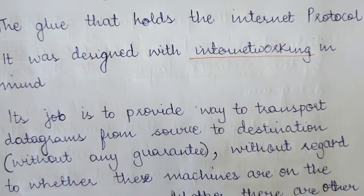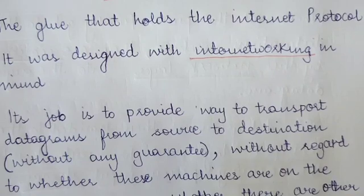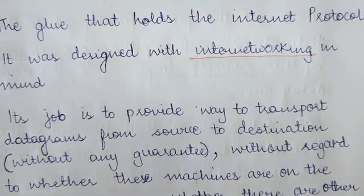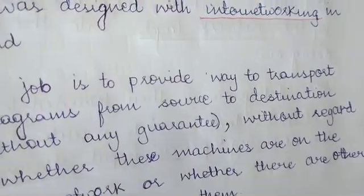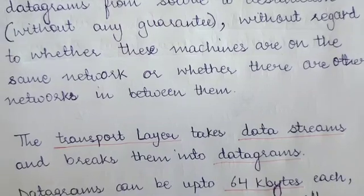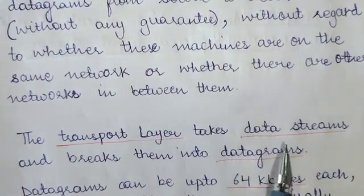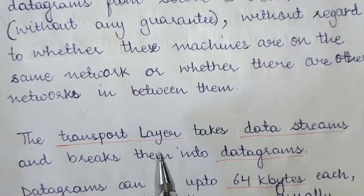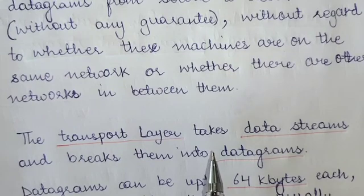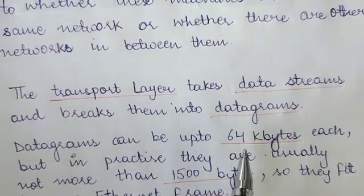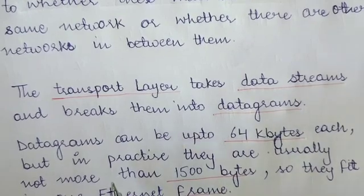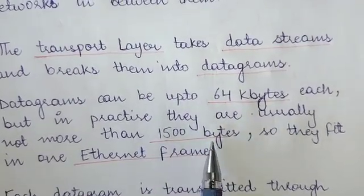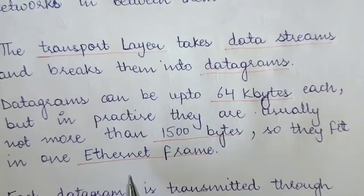IP transports datagrams from source to destination without regard to whether the machines are on the same network or whether there are other networks in between them. You can transmit data between any two hosts irrespective of whether they exist within the same network or are part of two different networks. The transport layer takes data streams and breaks them into datagrams. The maximum size of datagrams can be up to 64 kilobytes each, but in practice they are usually not more than 1500 bytes, so they can easily fit in one Ethernet frame.